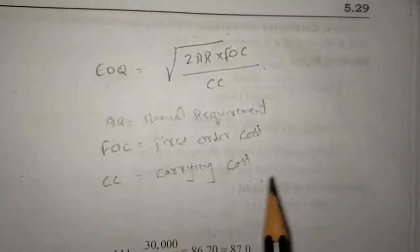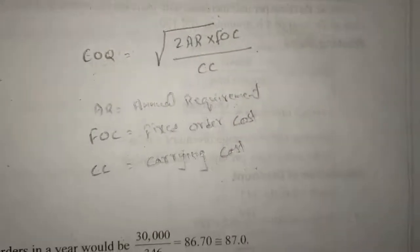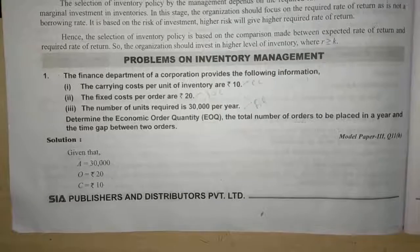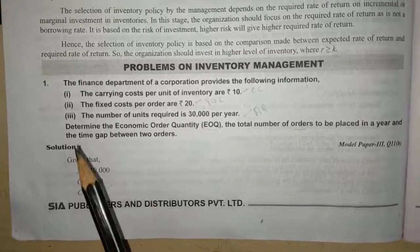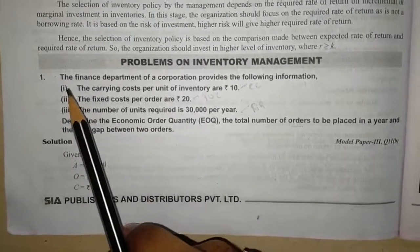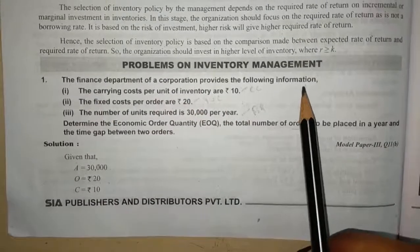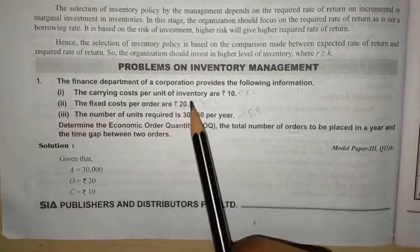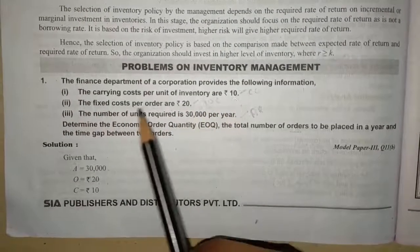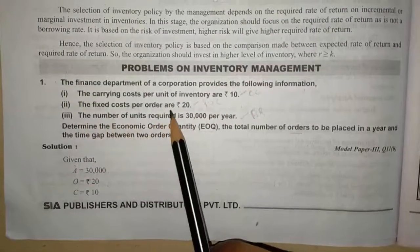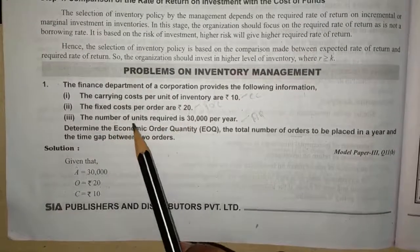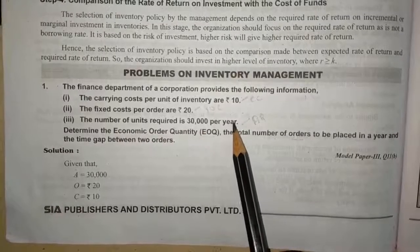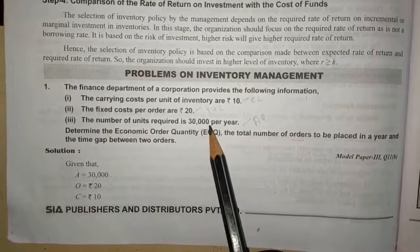I will read the question and we will see how to solve the problem. The finance department of a corporation provides the following information: the carrying cost per unit of inventory is 10 rupees, the fixed cost per order is 20 rupees, and the number of units required is 30,000 per year.